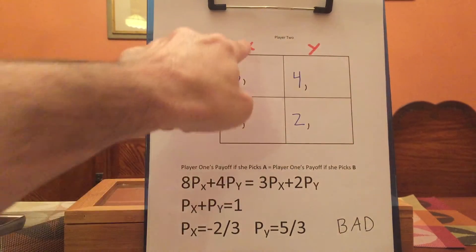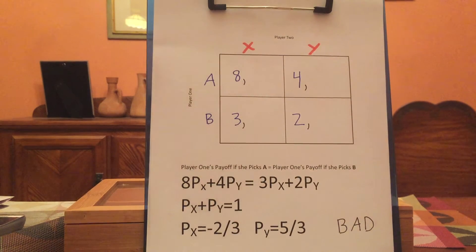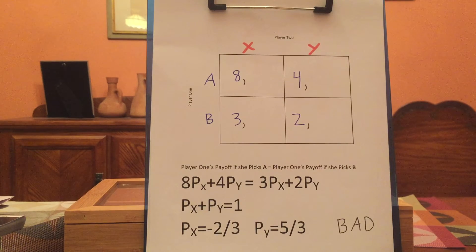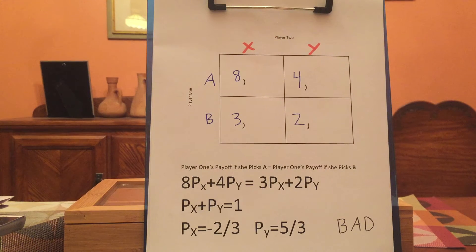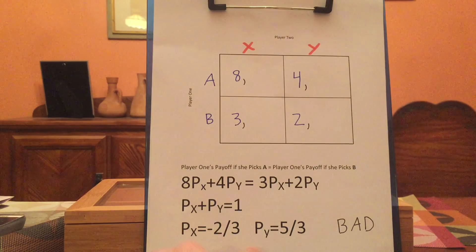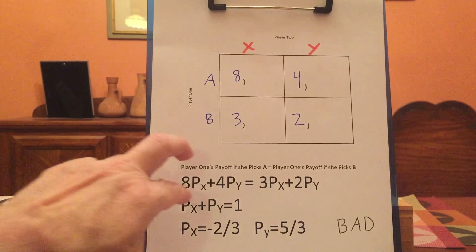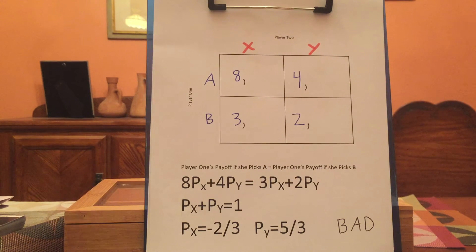Player two is playing X with negative probability. What does that mean? Well, it doesn't mean anything — it can't happen. So the math is telling us that no mixed strategy is possible. This generalizes: if you're trying to solve for the mixed strategy in a two-by-two simultaneous move game and a mixed strategy is possible, you'll solve for four probabilities all between zero and one. If it's impossible, you'll get probabilities greater than one or less than zero — or sometimes you can't even solve the two equations and you'll end up with something like two equals one. So the math will tell you if a mixed strategy is possible.